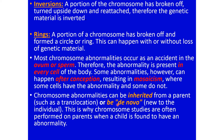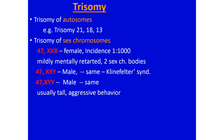Some abnormalities can be inherited from a parent, such as a translocation, or may be de novo — new to the individual. This is why chromosome studies are often performed on parents when a child is found to have an abnormality. Trisomy may involve the autosomes or the sex chromosomes. Trisomy of chromosomes 21, 18, and 13 are common.